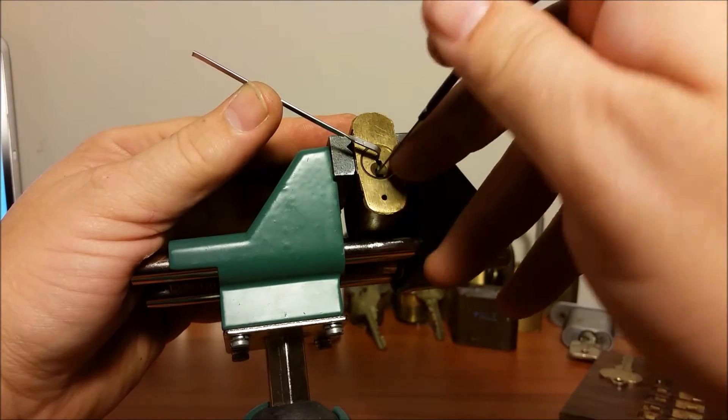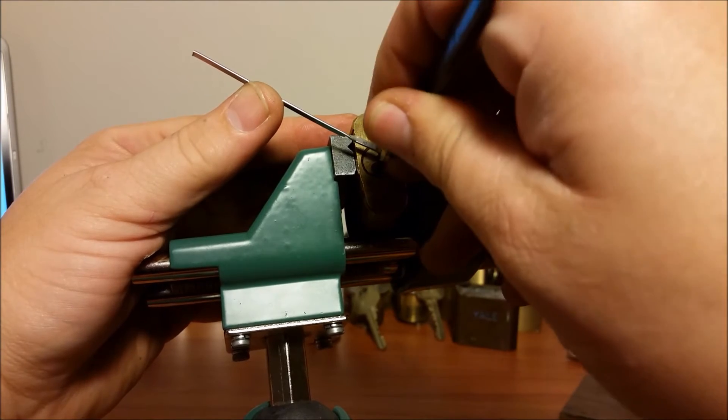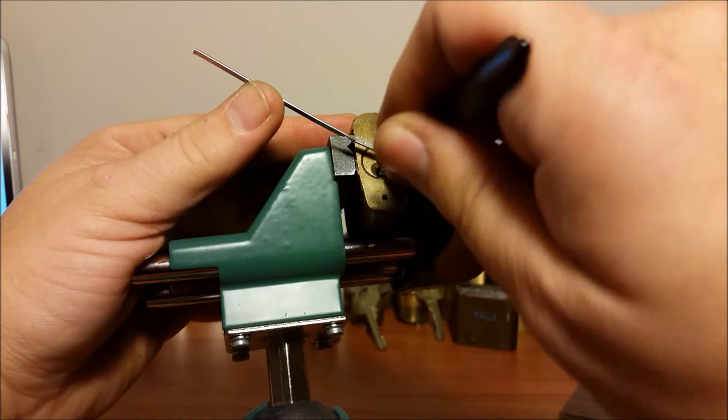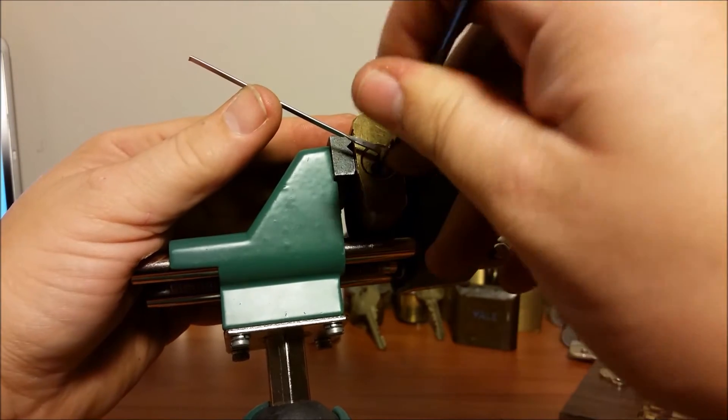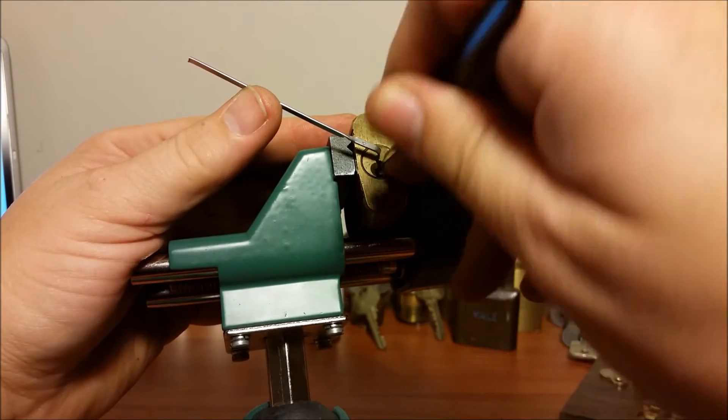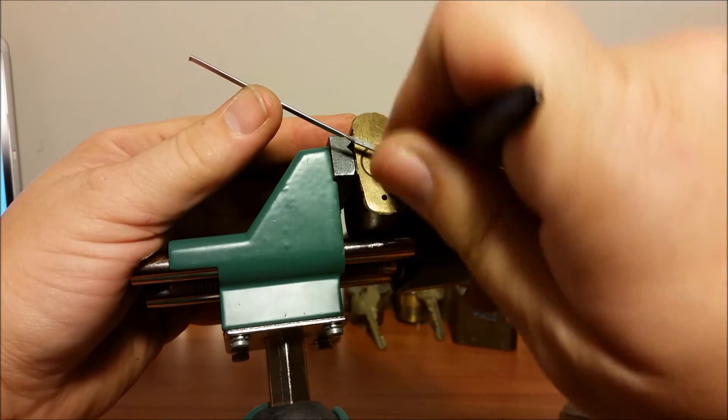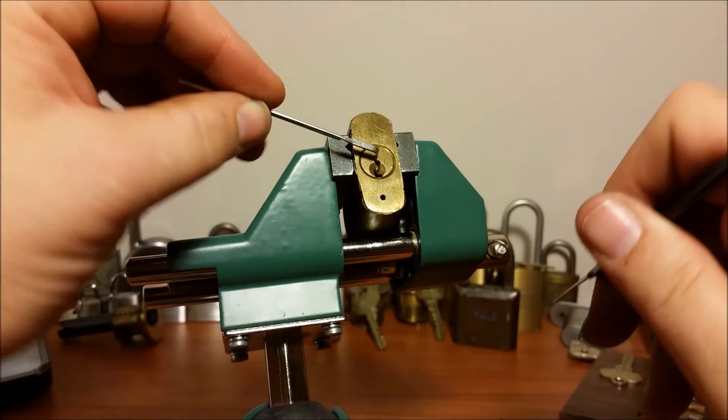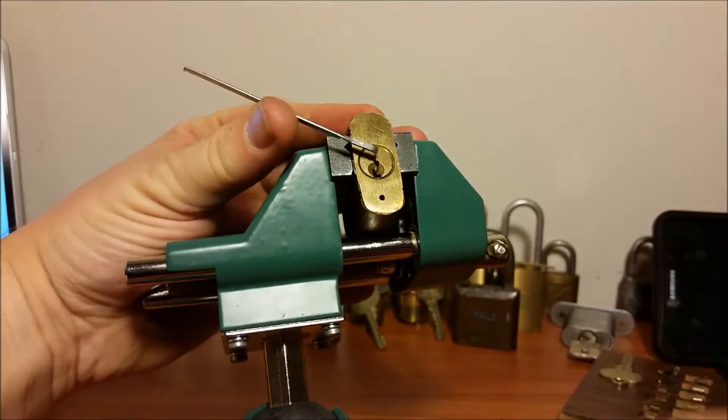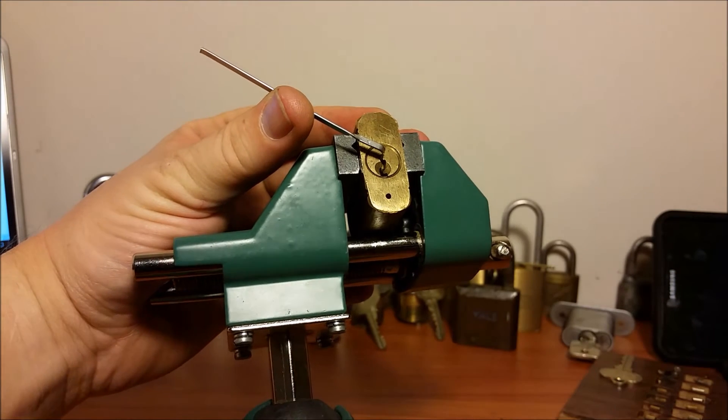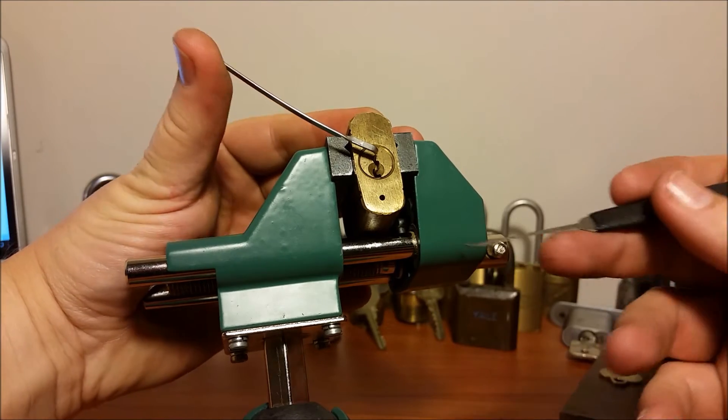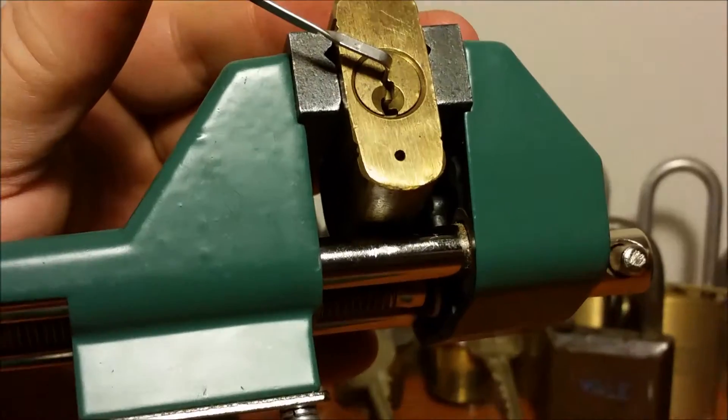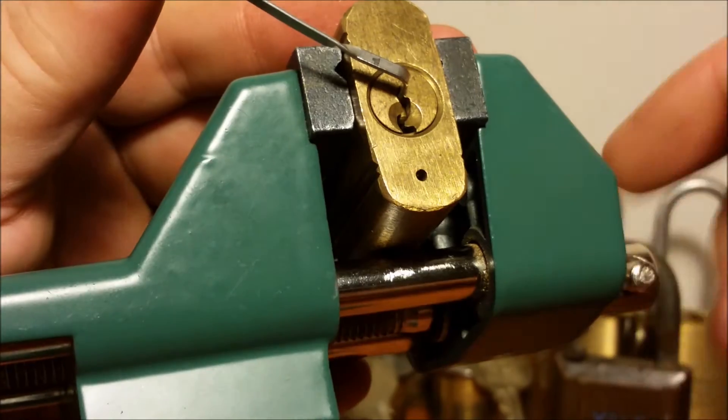It's kind of a tight keyway for this 25 thousandths pick. And definitely what I was fearing here, going off this ledge. I overset everything, so let me find a thinner pick here. Let me go with the 15 thousandths. I'll go ahead and zoom in some for you too.